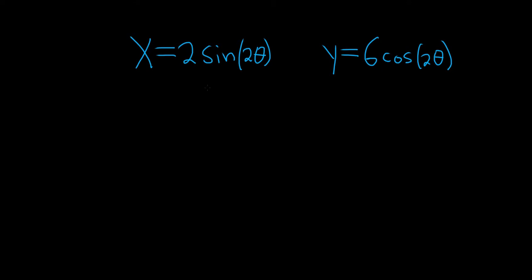In this problem, we have to write these parametric equations in rectangular form and give a sketch and indicate the orientation. Let's go ahead and work through it. Solution. Whenever you have trig functions like this, the strategy is to solve for the trig functions and then use an identity.